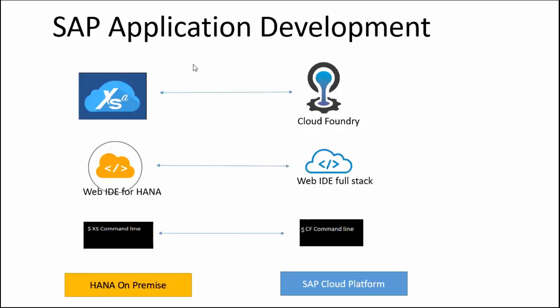From this picture, we can also see the cloud and on-premise options available for application development in SAP. XS Advanced is the on-premise application development platform, while on cloud, Cloud Foundry is the application development platform. We were using WebIDE for HANA on-premise to create, build, and deploy the applications — database applications, HTML and Node.js applications, etc.